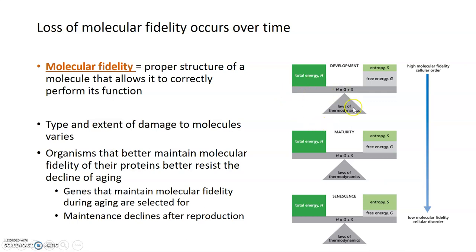When you think about all of this in the system over time, during development you have total energy, or H, in a system. That total energy is equal to the amount of usable energy, or free energy, and the amount of entropy. During development, the entropy or disorder in the system is relatively low.